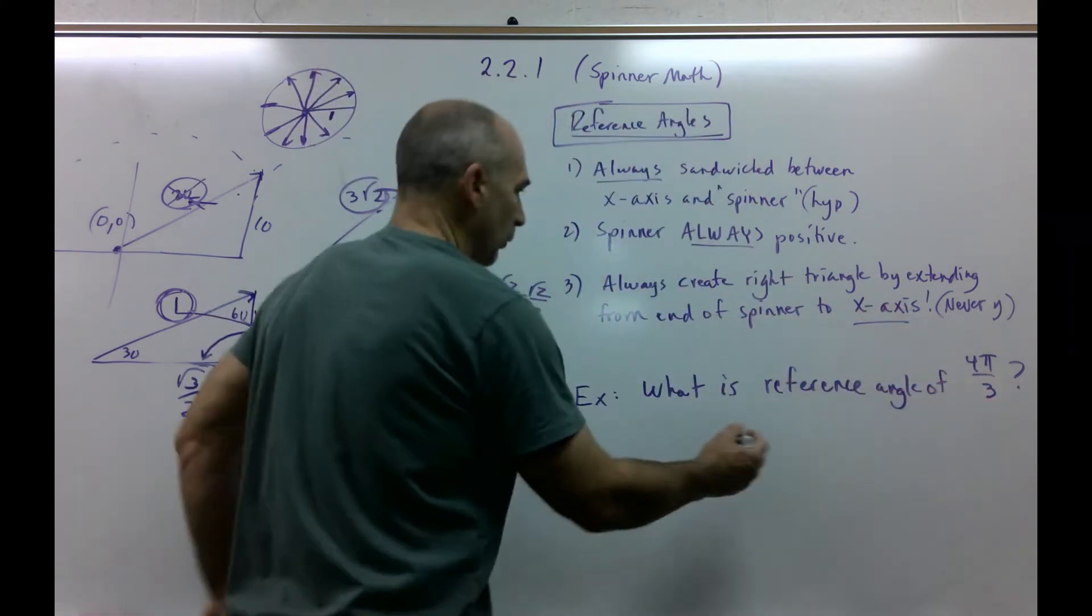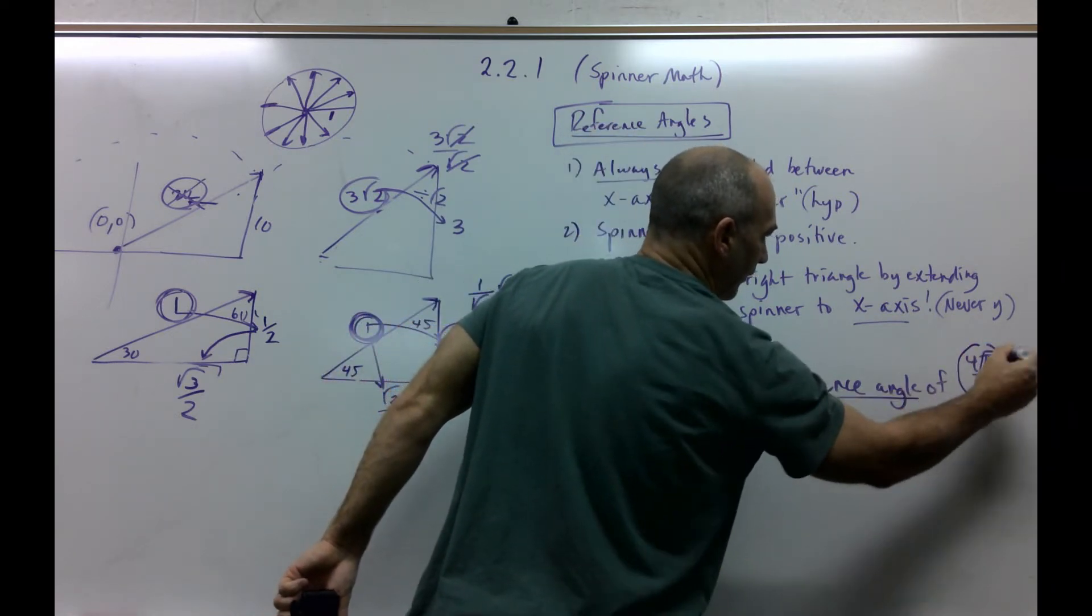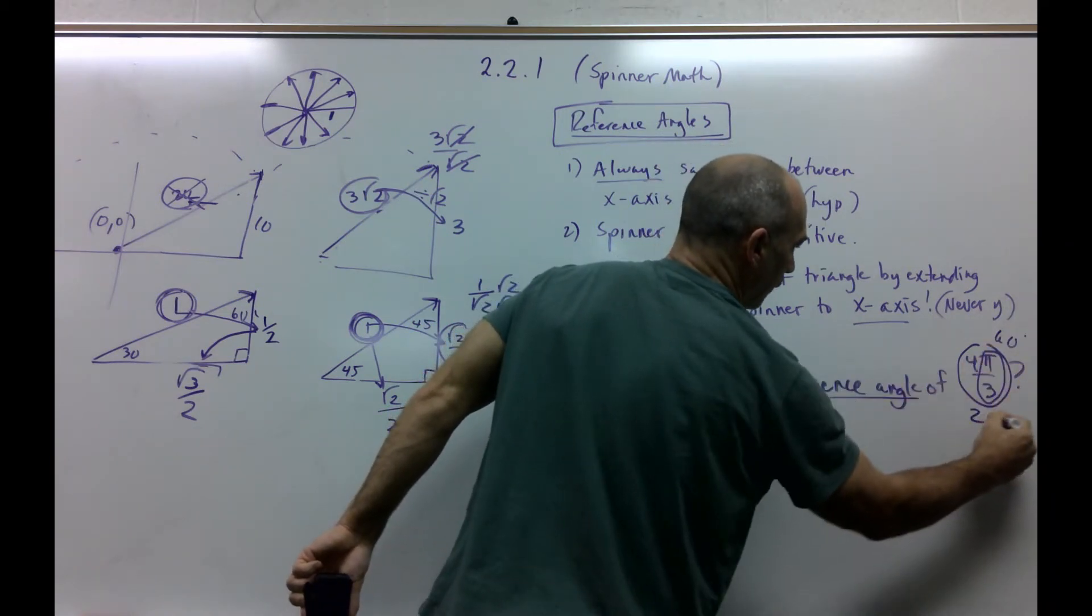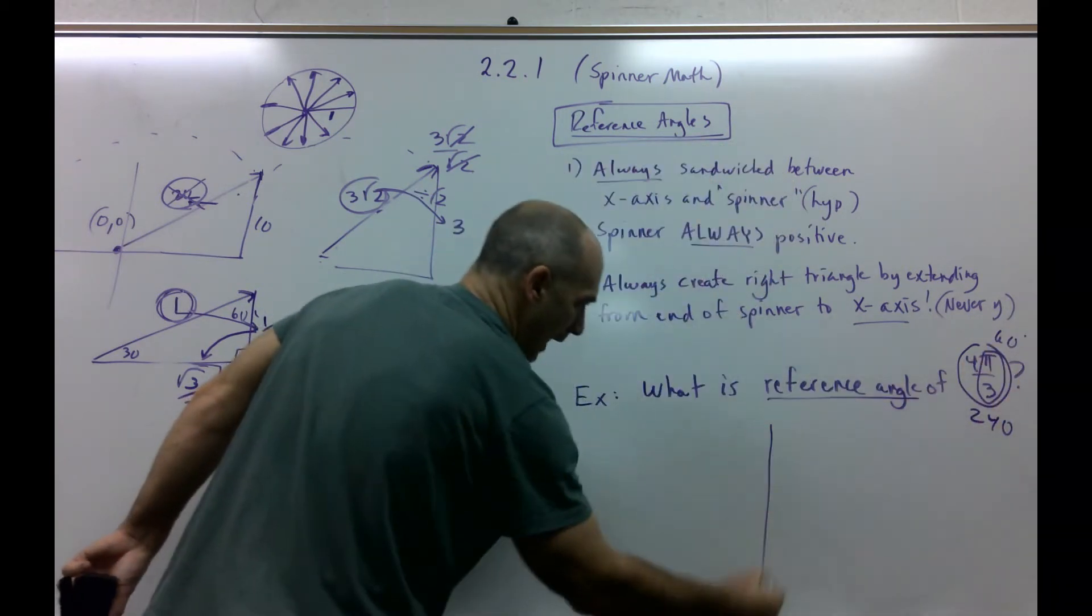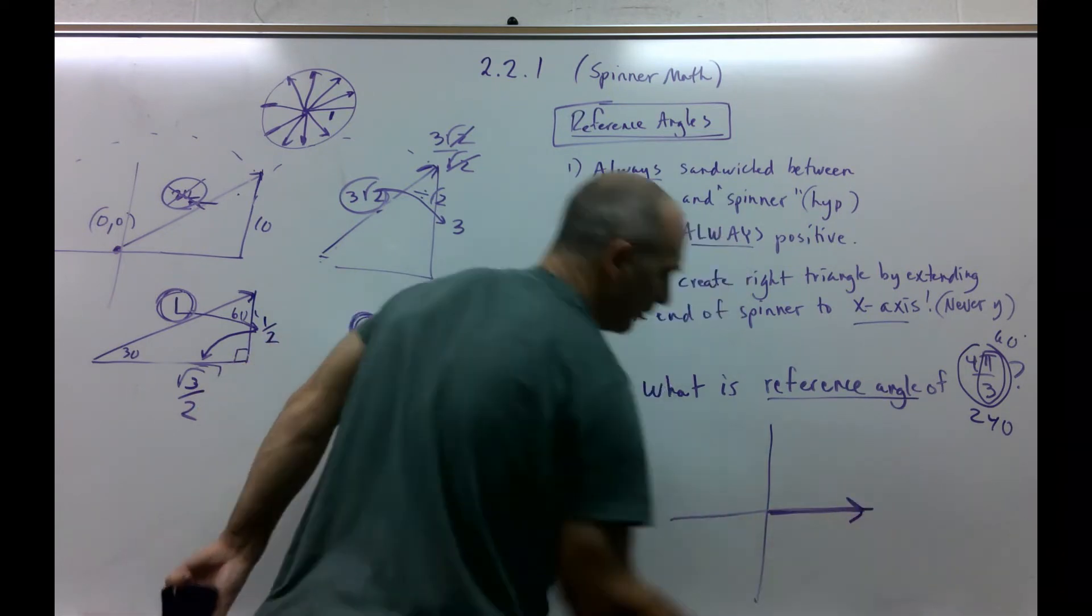So I'm going to explain these three rules with this example. It's saying, what is the reference angle of 4 pi over 3? Well, first of all, pi over 3 is 60 degrees. 4 times 60 is 240. So what I need to do, take my spinner. Remember, my spinner always starts there. Always, always, always. That's a fourth always.